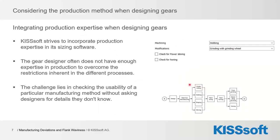That's why we started to incorporate production expertise in KISSsoft. We have a manufacturing tab where you can choose the hobbing process and the grinding process. In the grinding process you can check for power skiving or honing — special processes which can be very productive, meaning lower cost compared to other processes — but not every manufacturing process is able to produce the exact wanted modifications without bigger deviations.